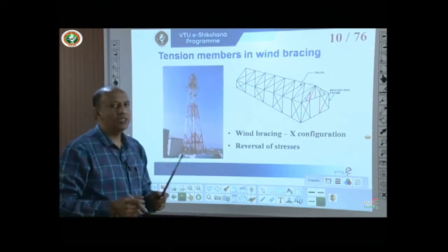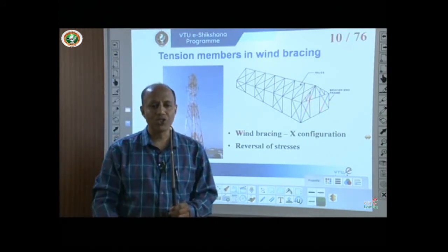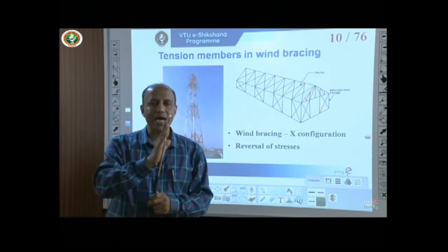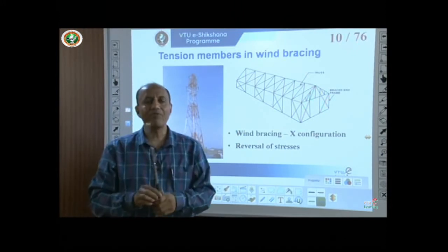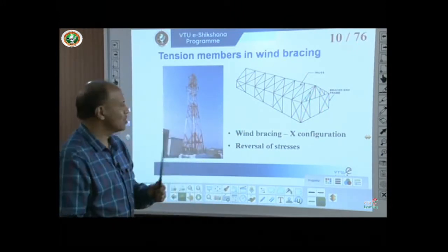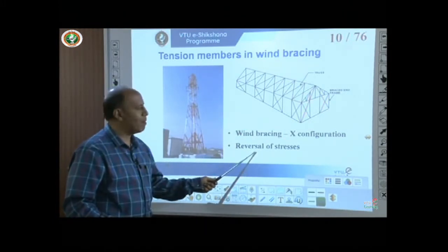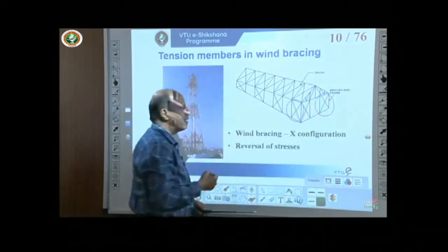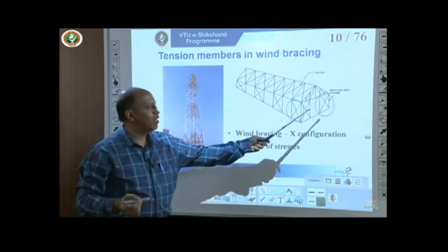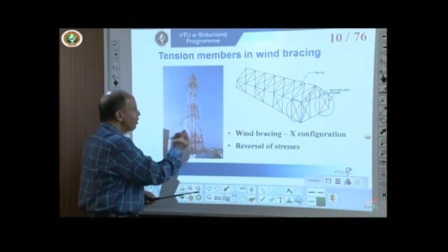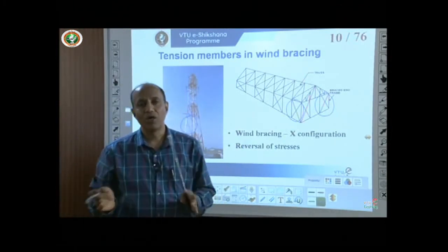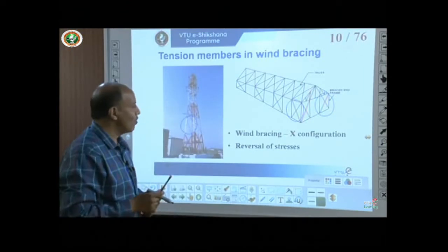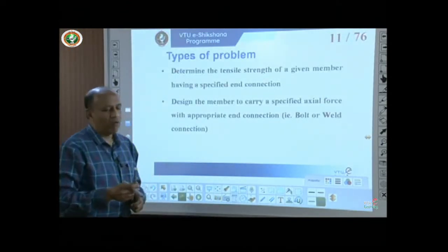In towers subjected to wind loads, the load direction can reverse over time — wind acting one way, then the other — causing reversal of stresses in members. In such cases, cross-bracing or X-bracing is used on the sides of structures. With X-bracing, at any given time one member will be in tension and the other in compression, so this configuration is commonly seen where load reversal is expected.